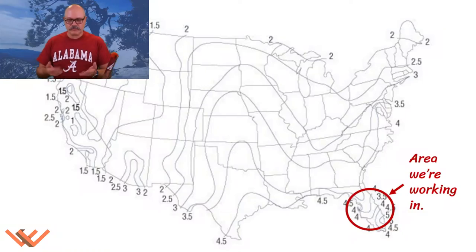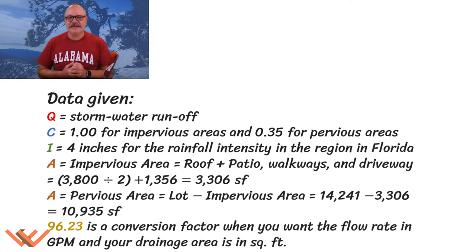Let's take a look at this map. This map is showing us the rainfall intensity, a historic hundred year map. And down in the corner there, you'll see where we're working at in Florida, and it's four for the region where he's at.